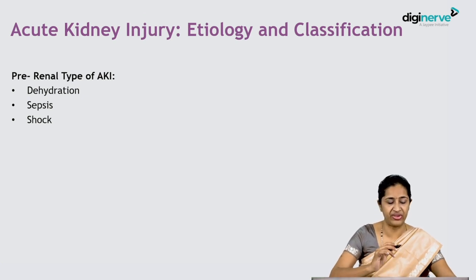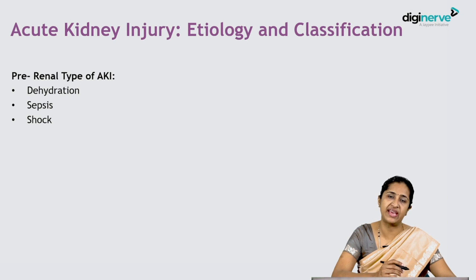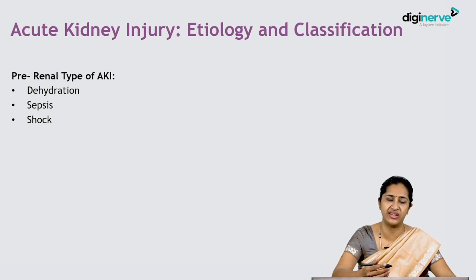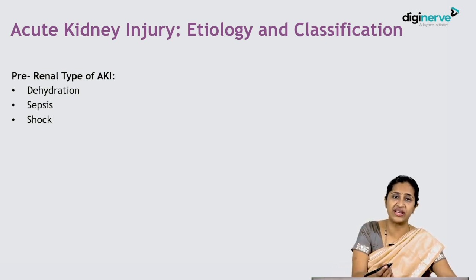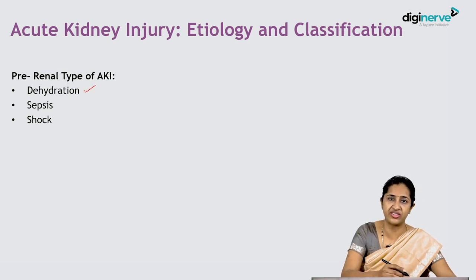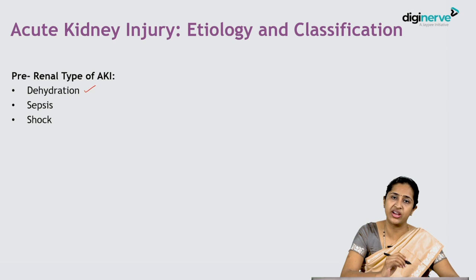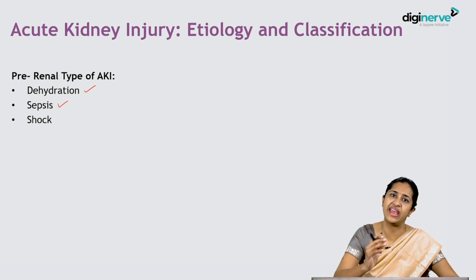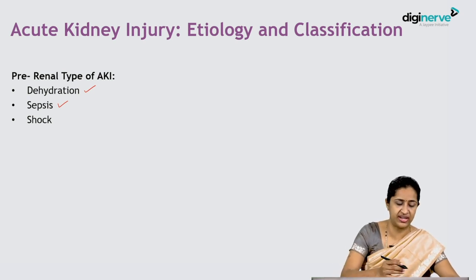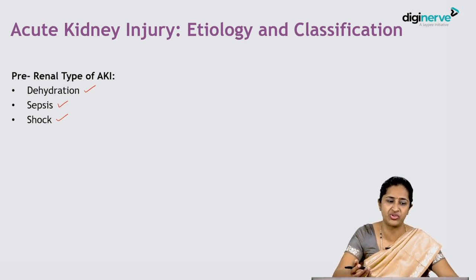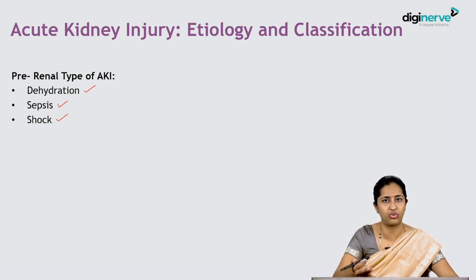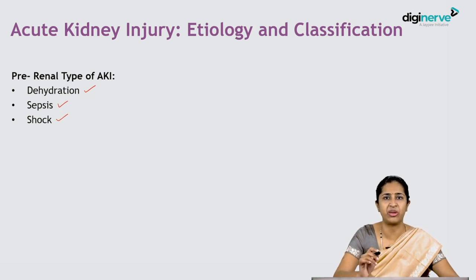The pre-renal type of AKI results because of a systemic cause outside the kidney — like diarrhea or acute gastroenteritis causing dehydration and then renal insufficiency. Sepsis, where toxins affect the kidney along with dehydration, also causes AKI. Shock causing renal hypoperfusion — whether hemorrhagic shock, hypovolemic shock, congestive cardiac failure, or cardiogenic shock — all of these can produce pre-renal type of acute kidney injury.